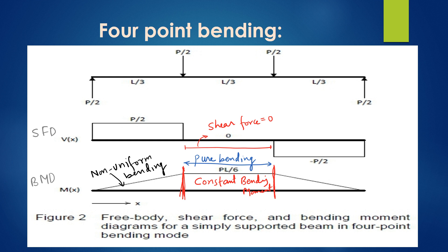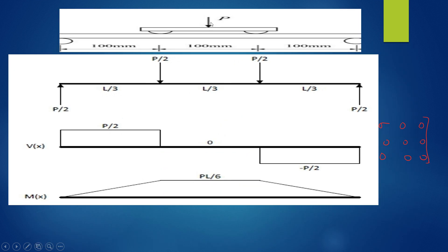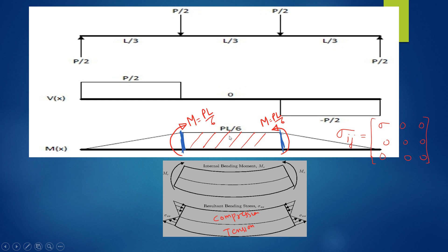For deriving bending stresses, we need the pure bending case — constant bending moment where shear force is 0 — and we are interested in that region only. In an actual beam, the load P is applied and distributed as P by 2, P by 2 from the loading wheel. The bending moment value at the mid span is PL by 6, which is the pure bending case; left and right sides are non-uniform bending.